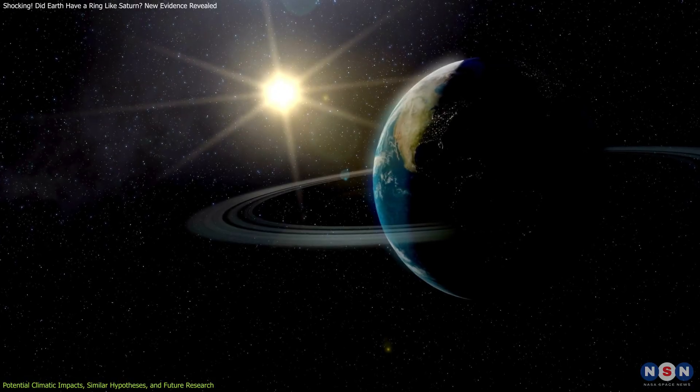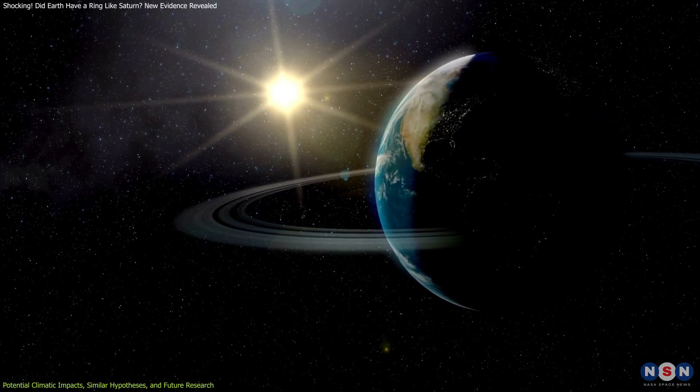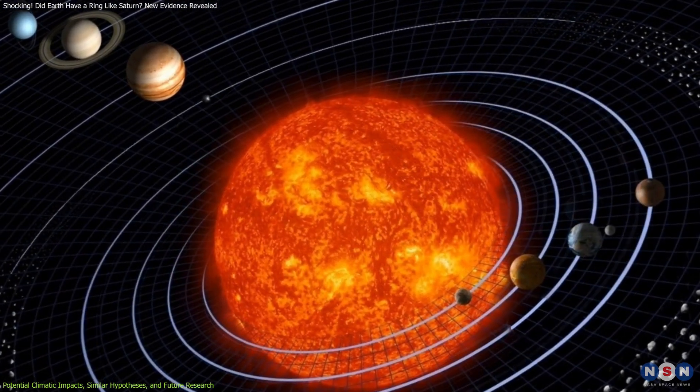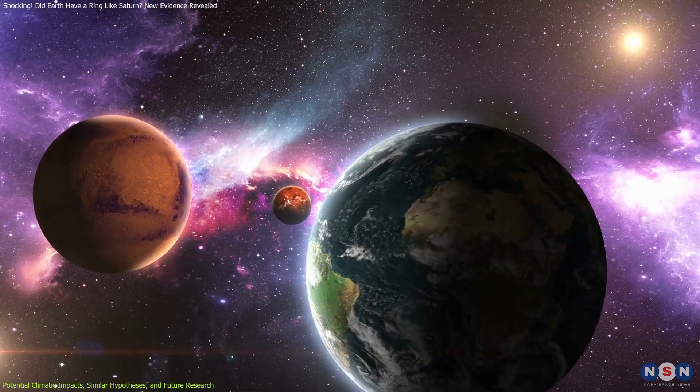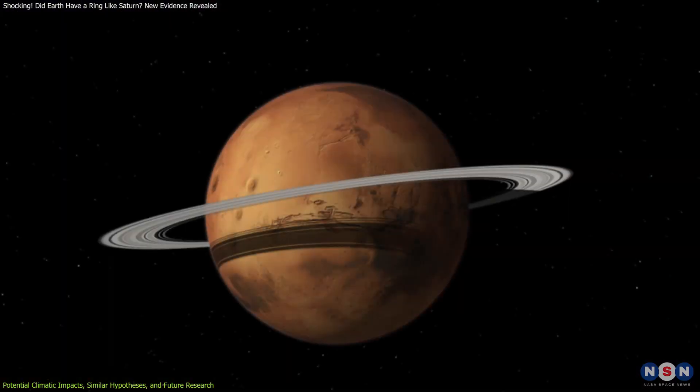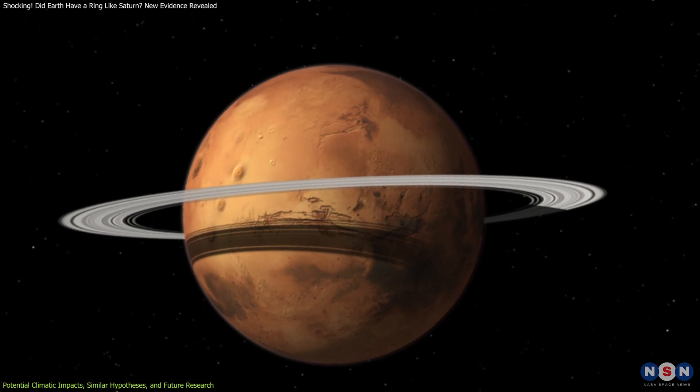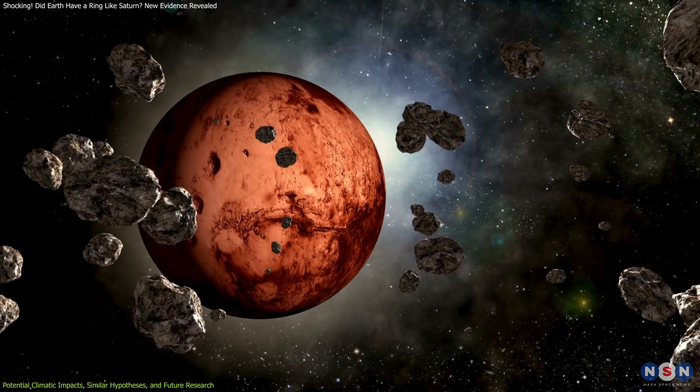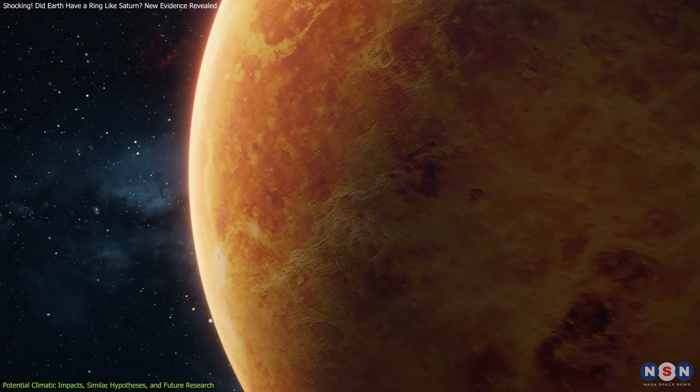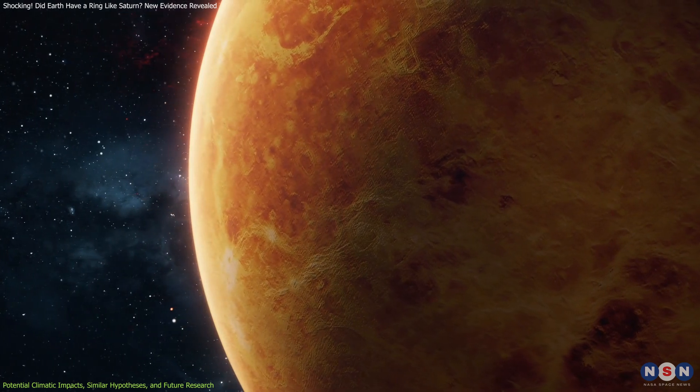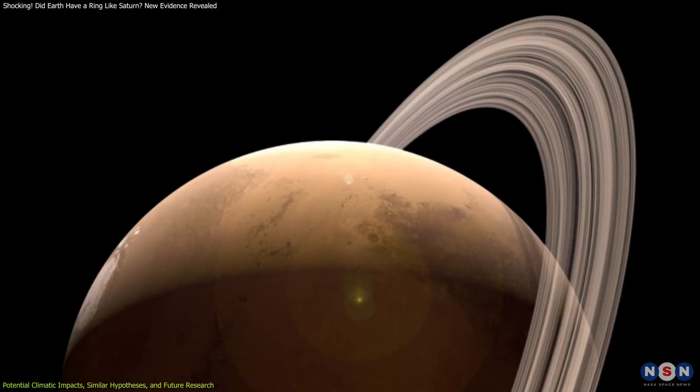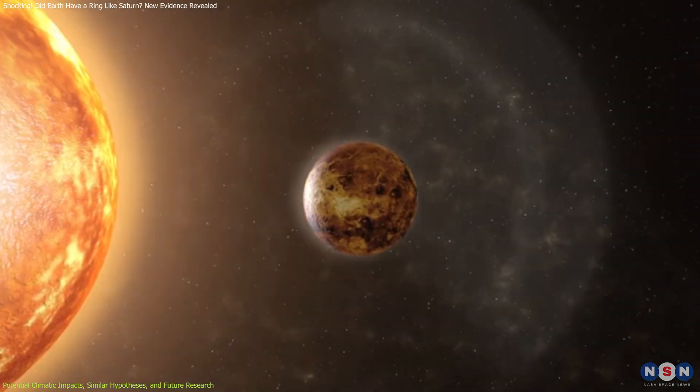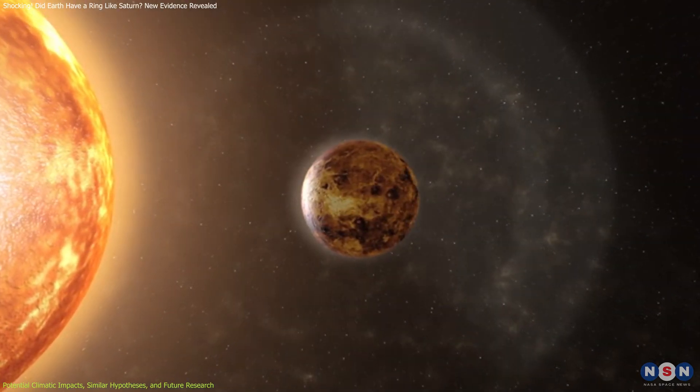However, Earth's hypothetical ring is not the only example of such celestial phenomena. Other planets in our solar system, like Mars and Venus, have also been speculated to have experienced similar events. For instance, there is a hypothesis that Mars could have temporarily formed rings from debris ejected by impacts on its moons. Similarly, Venus, with its thick atmosphere, could capture asteroid debris, although any such rings would likely be short-lived due to its proximity to the Sun and intense gravitational forces.